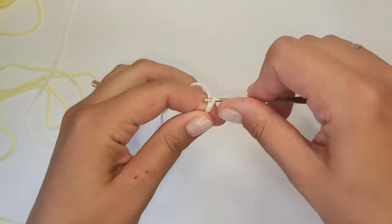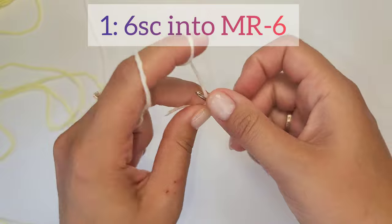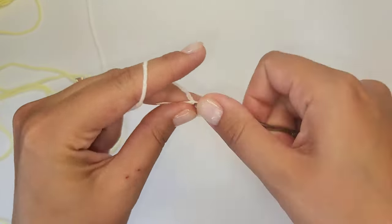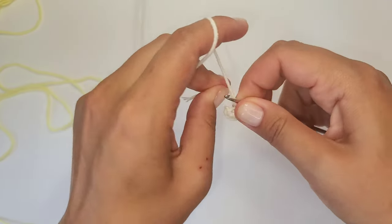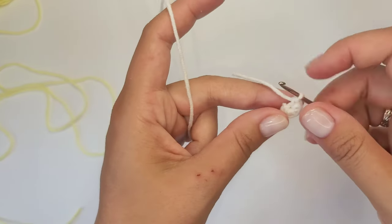Start crocheting from white yarn, a magic circle and 6 single crochet stitches into it. Then tighten the circle and the first round is ready. Cut the thread because we are going to change the color.